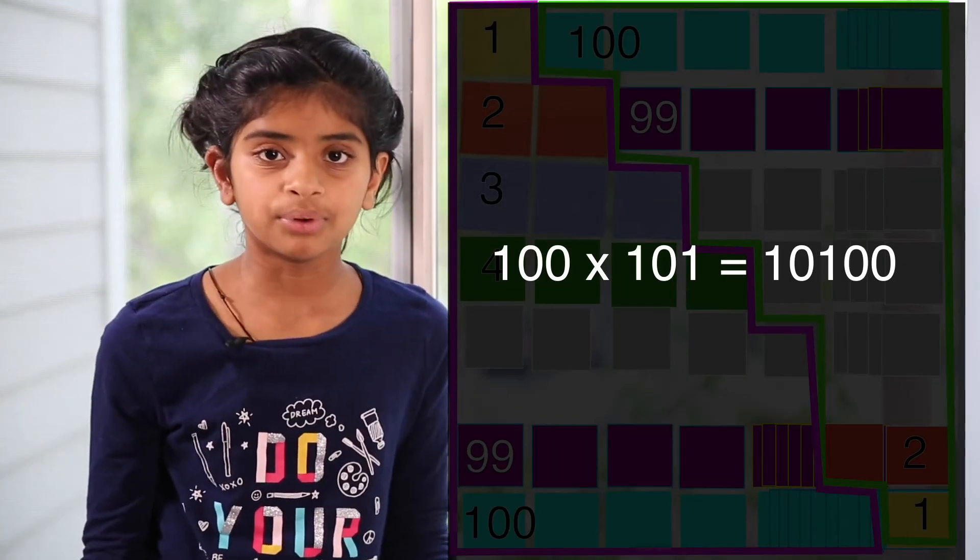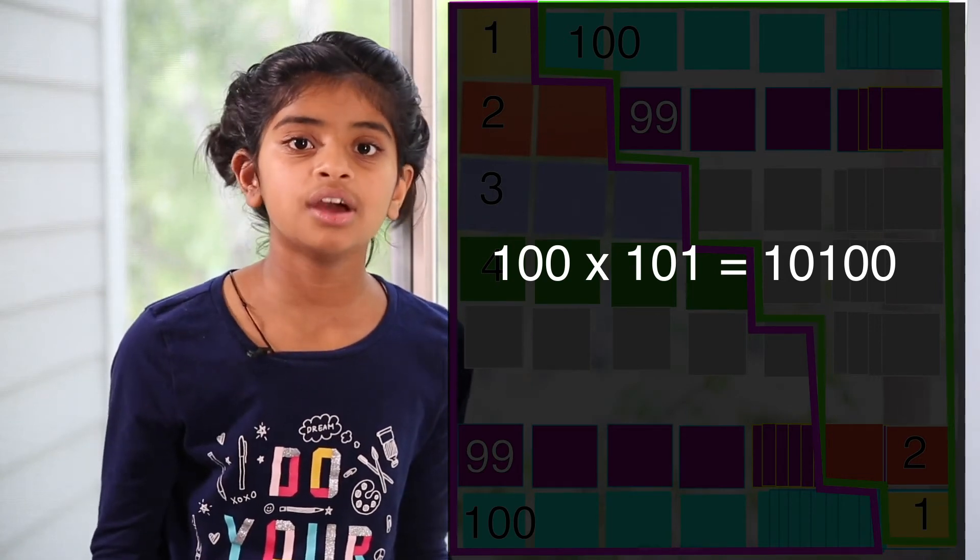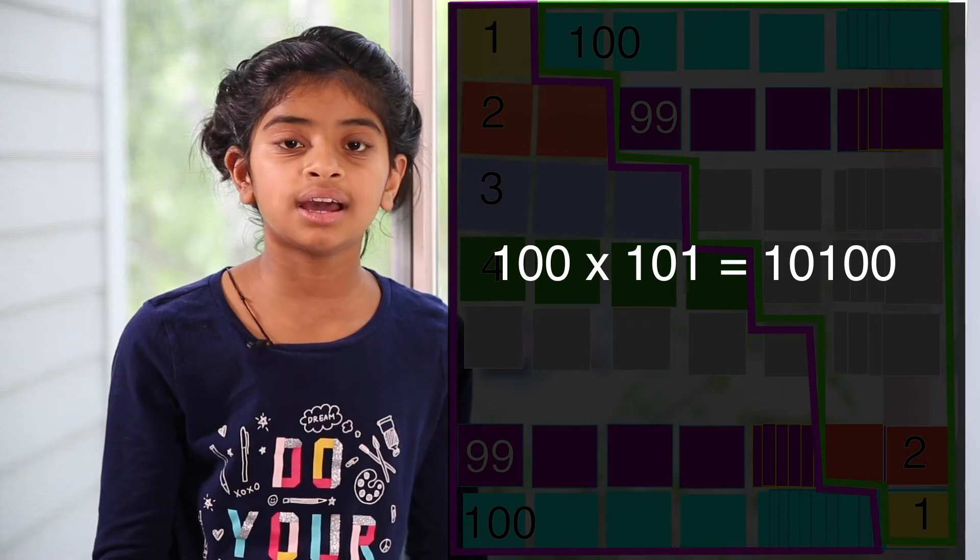So it'd be 100 times 101. That is very simple because 100 has two zeros that we can add in the end. So the answer is 10,100.